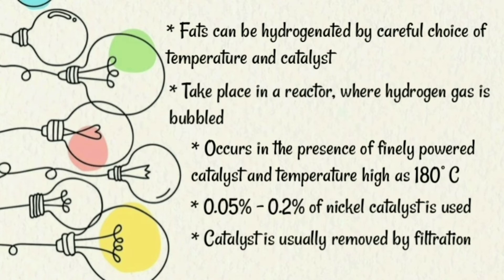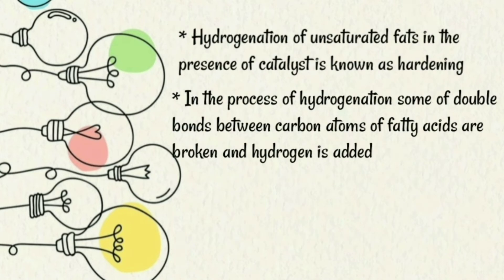The catalyst is finally removed after the process by filtration. The catalyst helps to speed up the reaction. Hydrogenation of unsaturated fats with a catalyst is known as hardening. In the hydrogenation process, the double bonds that exist between carbon atoms of unsaturated fatty acids are broken.